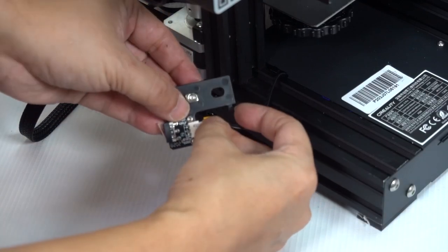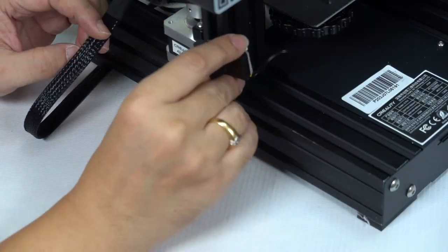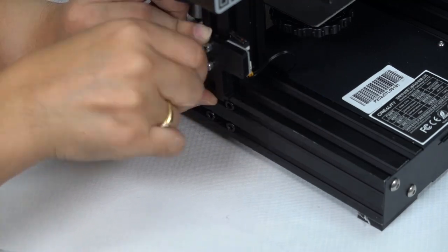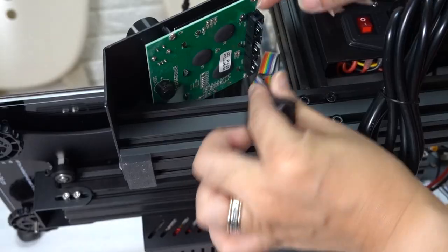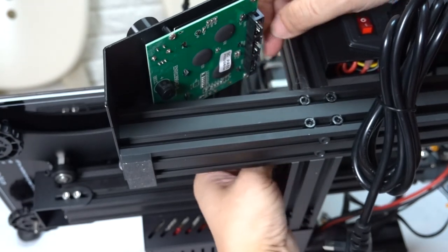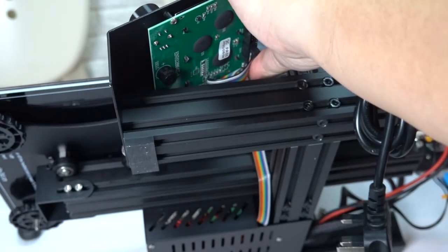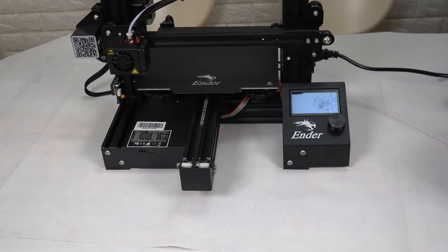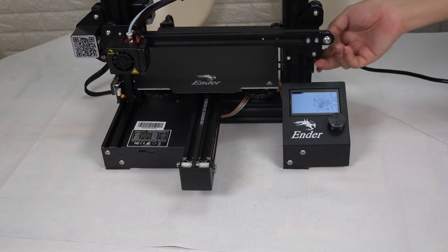You have to loosen it before you can plug in, and then reinstall. Finally, don't forget the rainbow wire of the control panel. Should be plugged into EXP-3. At this point, the entire installation has been completed.